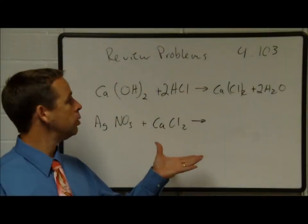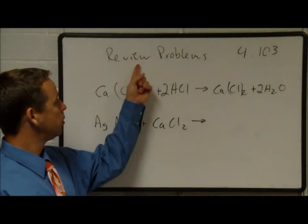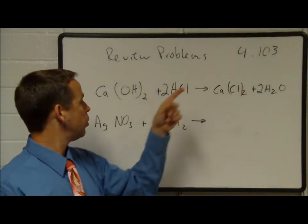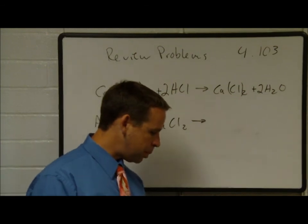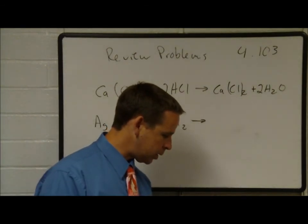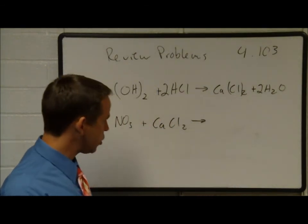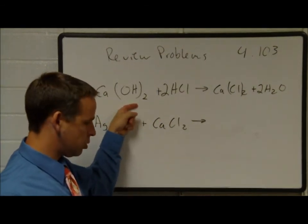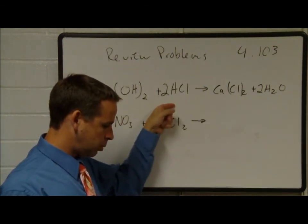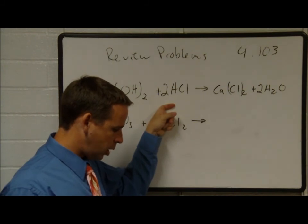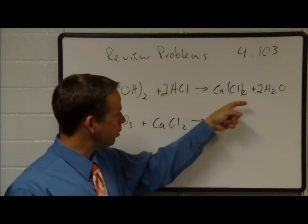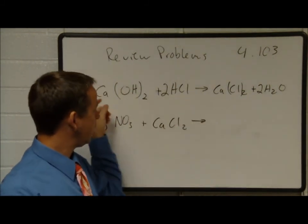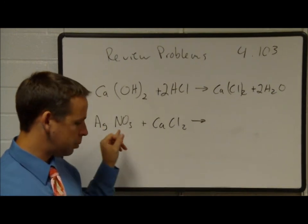This is problem 4.103. We're supposed to balance the following equations. The first one is calcium hydroxide plus hydrochloric acid to form calcium chloride and water. We can see that one is already balanced.